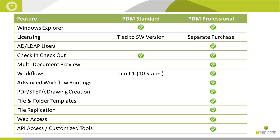While you can check in or check out any file type in either system, PDM Standard only supports built-in preview of SOLIDWORKS files through eDrawings. PDM Professional supports the preview of Office files, PDFs, images, 2D AutoCAD, and many more common file types.